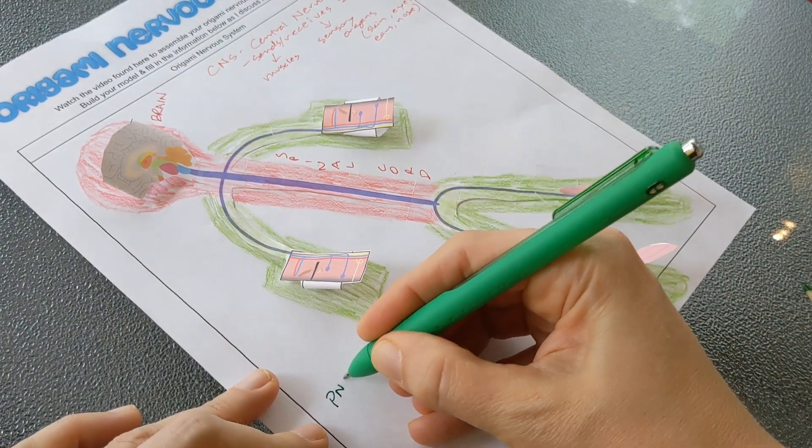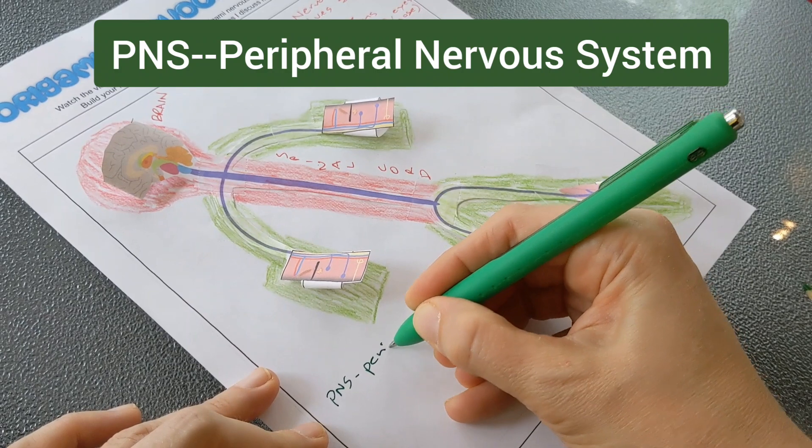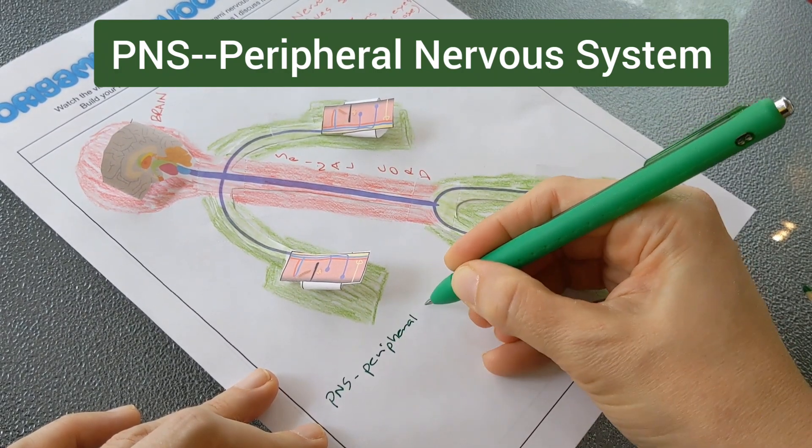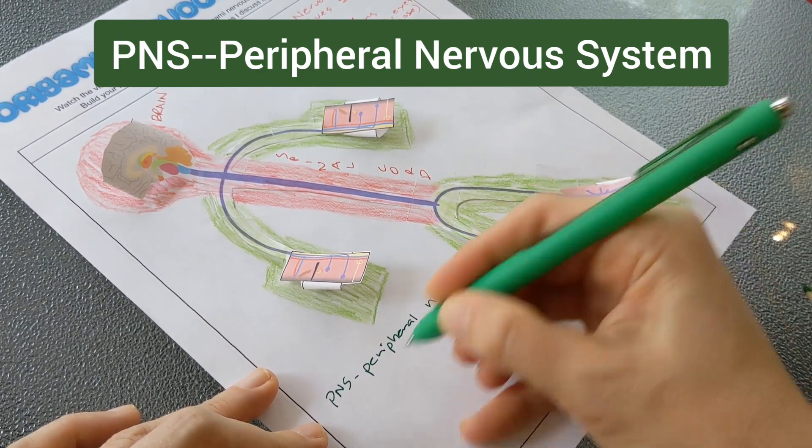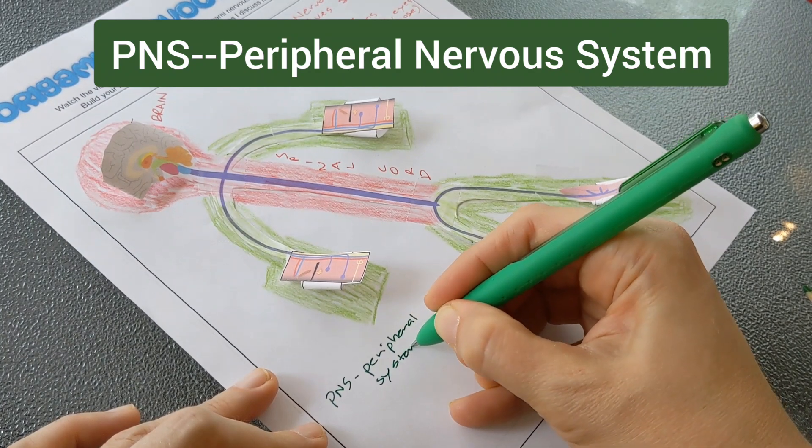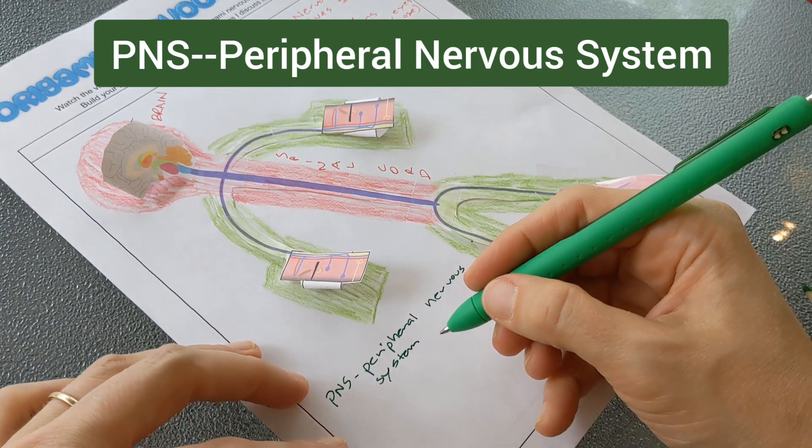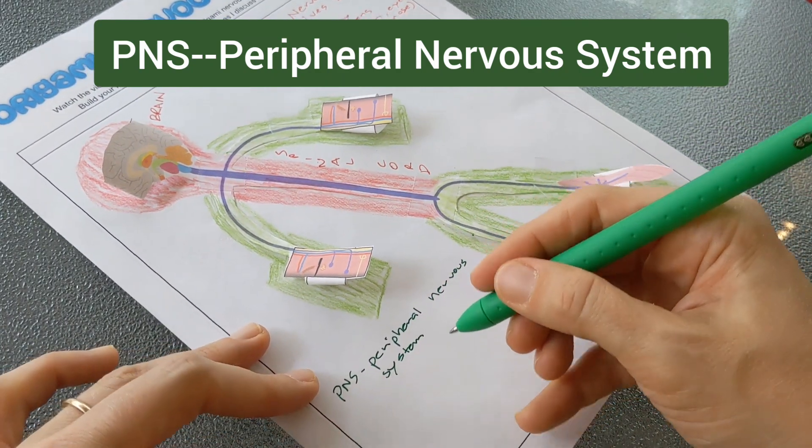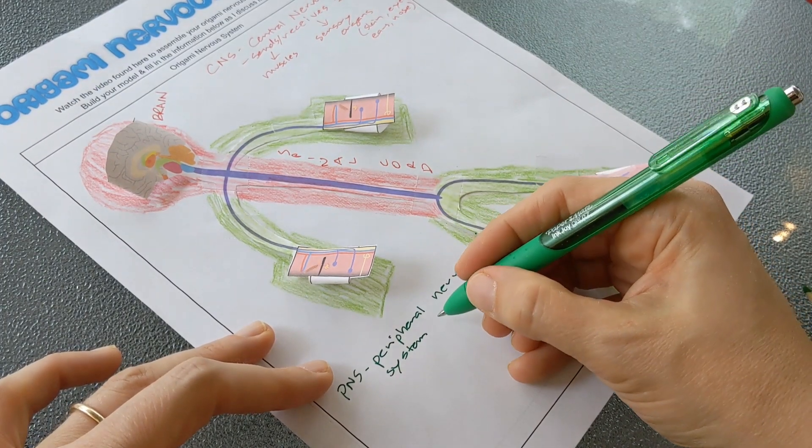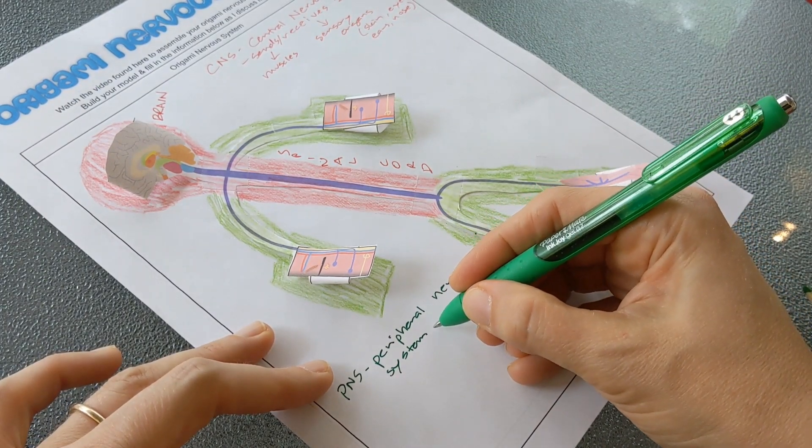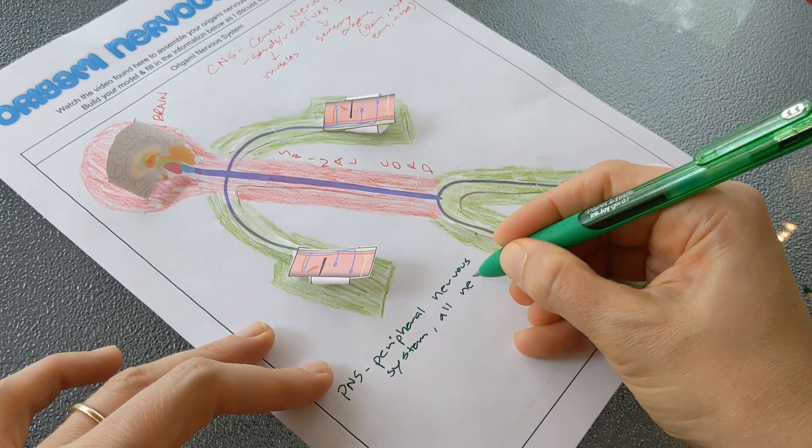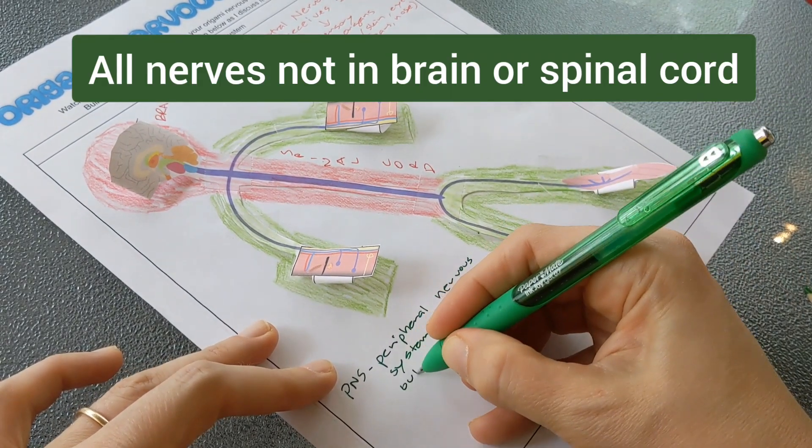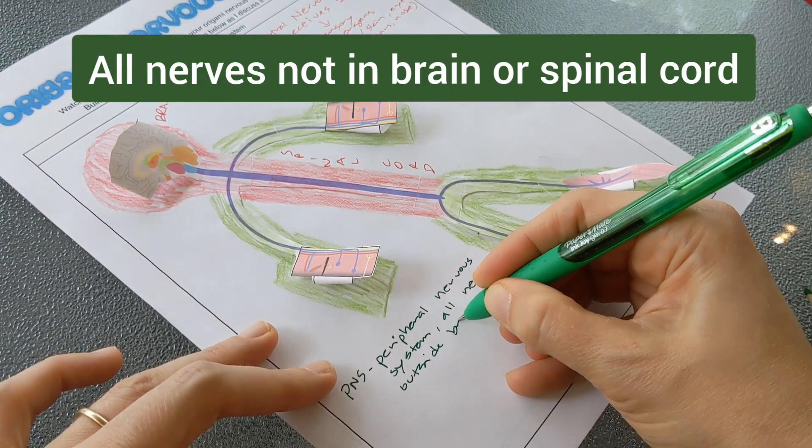So this is known as the PNS or the peripheral nervous system. If you think about the periphery, the periphery is on the outside of something, and so the peripheral nervous system is all the nerves outside the brain and spinal cord.